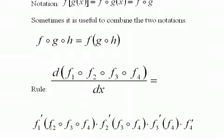You take the derivative of f1 and you put the composite of f2, 3, and 4 in times the derivative of f2 with the composite of f3 and f4 in times the derivative of f3 with just f4 and then times the derivative of f4. And you can see there's a nice little pattern running here.